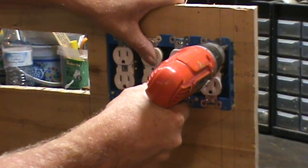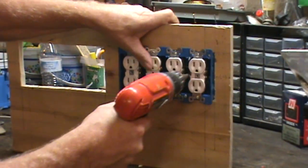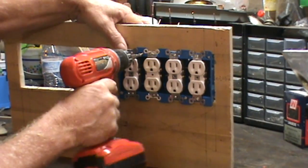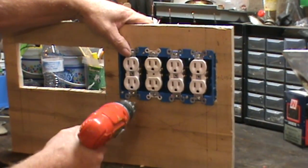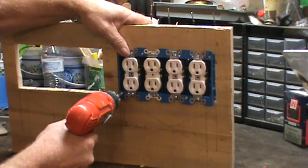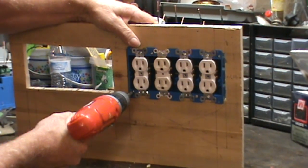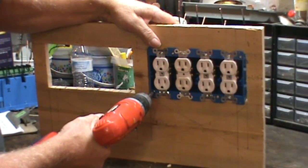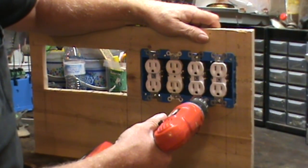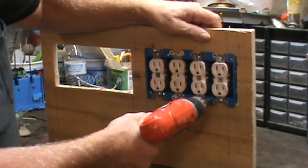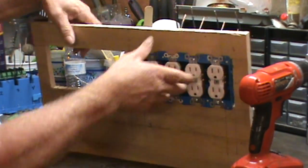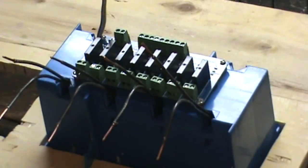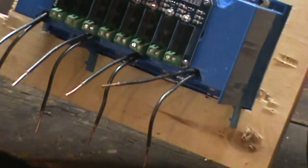As you tighten these screws, the mounting tab will automatically move up into place and lock the box. Don't get carried away as you're tightening. This is all plastic. If you look on the back side, you can see that the tabs have swung out and locked down against the wood. So we'll do that with both boxes.